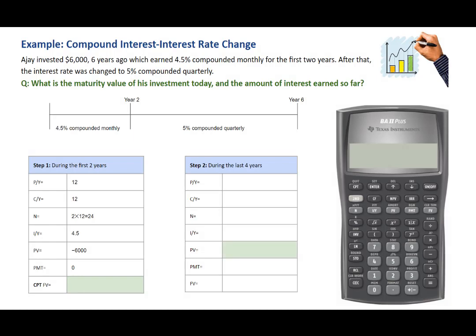In Step 2, PV would be the same value as the future value calculated in Step 1. We are looking at the last 4 years. The interest rate has changed to 5% compounded quarterly. So IY is 5 and CY is 4. PMT is still 0 — there's no periodic payment — and PY is the same as CY, which is 4. N, the total number of compounding periods, is 4 years times 4 times per year, totaling 16. Now we're ready to use the financial calculator.